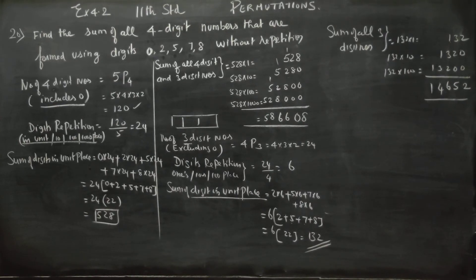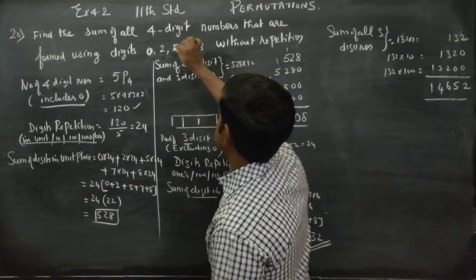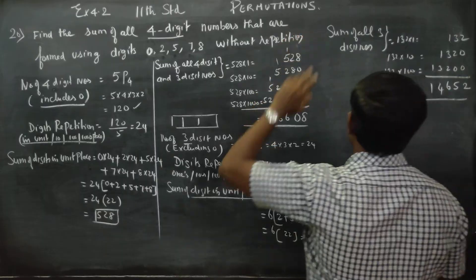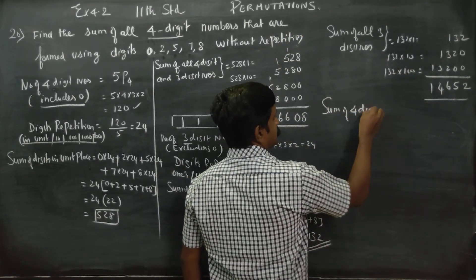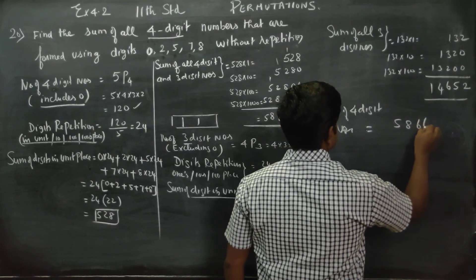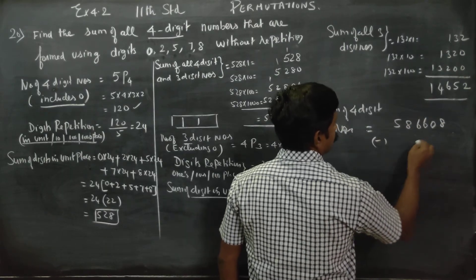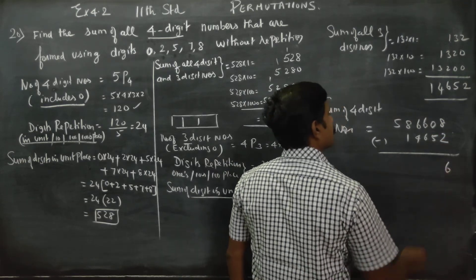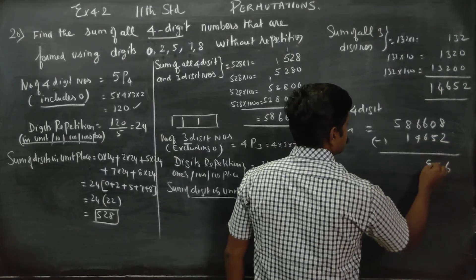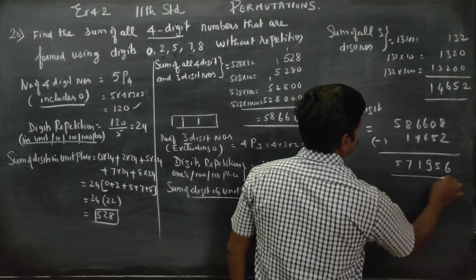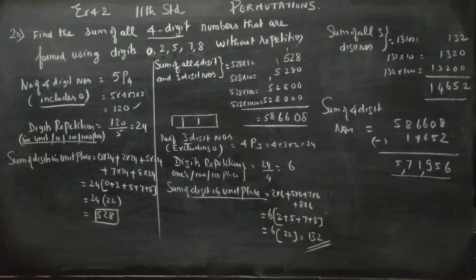Now the first total sum consists of both 4-digit as well as 3-digit numbers. So sum of 4-digit numbers is equal to 586608 minus 14652. Subtracting, your answer will be 571956. That is the exact answer.